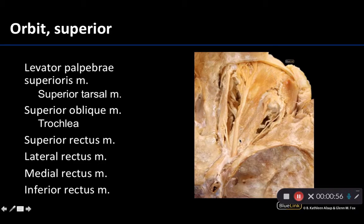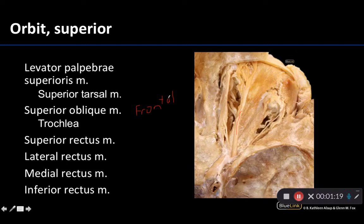Generally when I'm doing this dissection the very first thing I try to look for is what is called the frontal nerve. This structure right here — I don't have this on the list of structures because I'm talking muscles, but for me it's really key finding this particular nerve because it's usually the first thing you see. You can often see it through the fat and it helps guide me in terms of being able to locate the other muscles in this region.